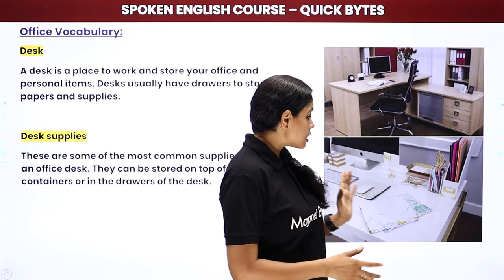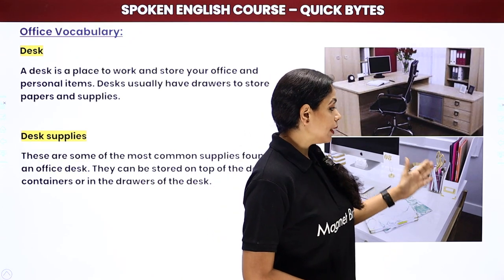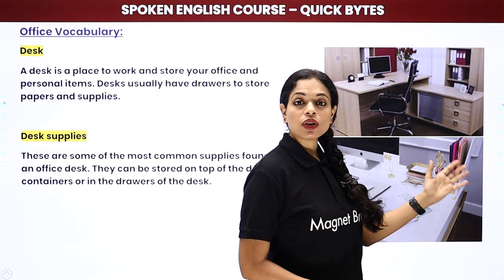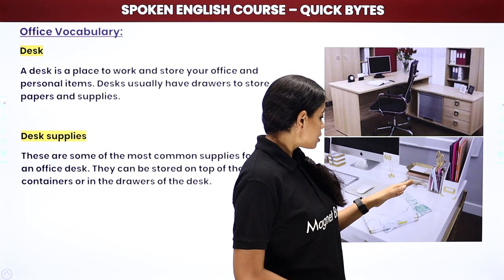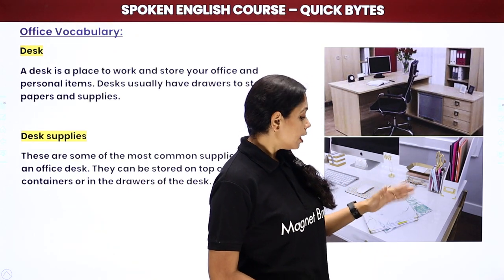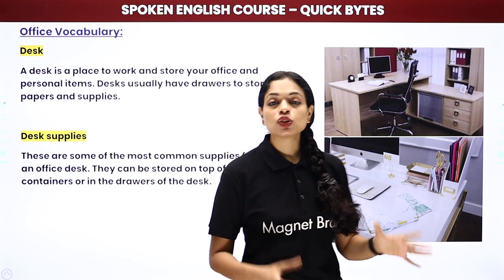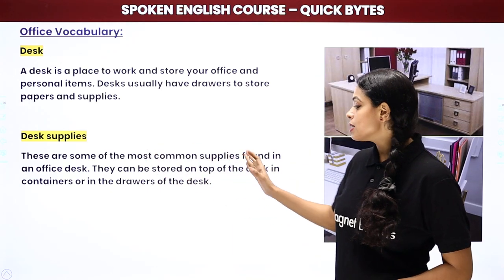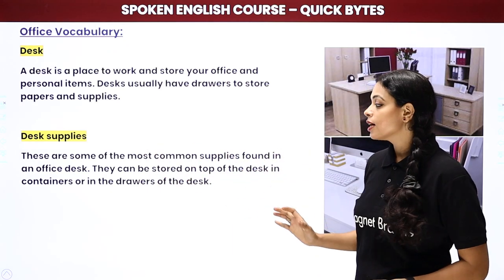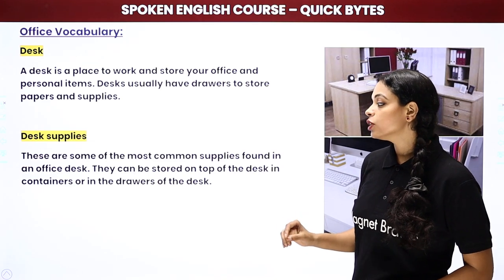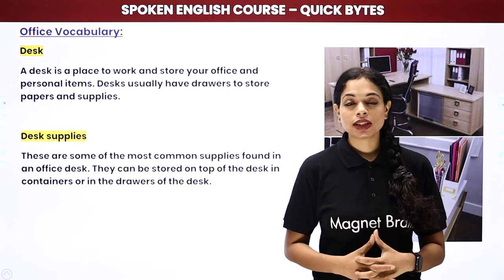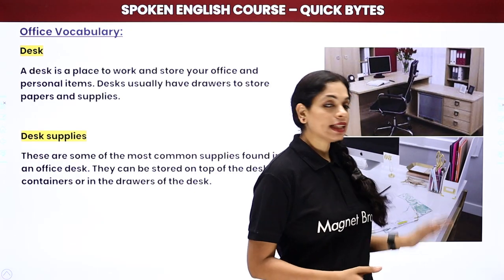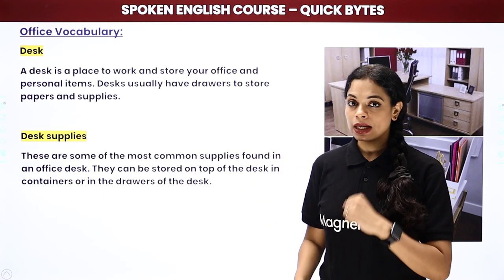Desk supplies include everything — your pen stand, file organizers to manage all your files, mouse pad, and different papers. These are some of the most common supplies found on an office desk. They can be stored on top of the desk in containers or in the drawers of the desk. So things like your stapler, paper clips, etc., you can keep on top or in the drawers.